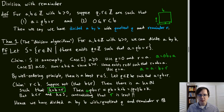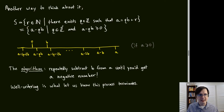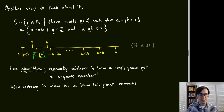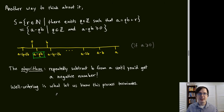This deserves to be called an algorithm: we can rewrite S as all A − QB for varying Q such that A − QB ≥ 0. When A is non-negative, we repeatedly subtract B until the result would go negative — that last positive value is R, and the count of subtractions is Q. Well-ordering guarantees this process terminates.